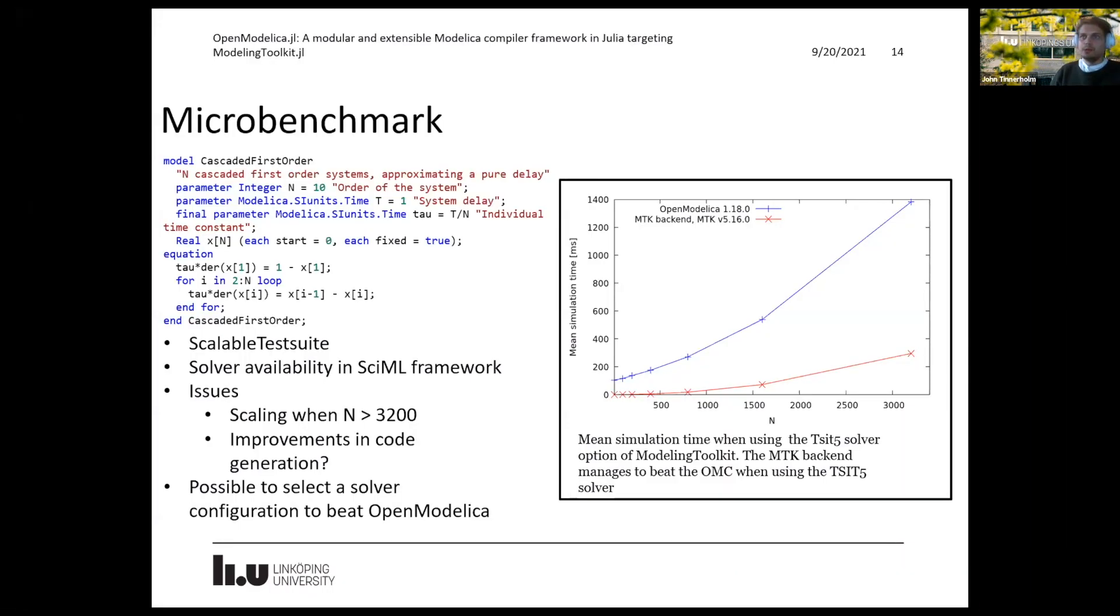So evaluating the performance of ModelingToolkit. We evaluated this framework by running and by selecting one model from the scalable test suite. The goal here was not an exhaustive test. Rather, can we select a configuration in ModelingToolkit that is not available in OpenModelica such that we can beat the OpenModelica compiler in terms of simulation performance? And the answer to this question was yes. However, there were some issues. When the system of equations grew large enough, we noticed that the compilation time of the generated Julia code increased exponentially. While we were able to generate code for up to 25,600 equations, we were unable to compile it down to ModelingToolkit's runnable code.